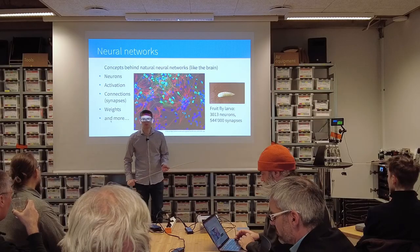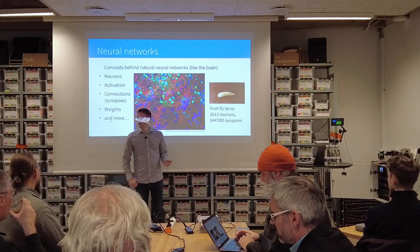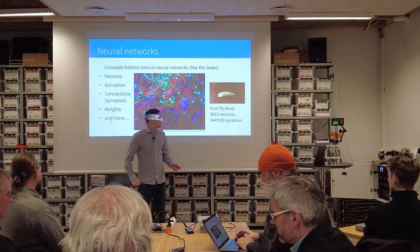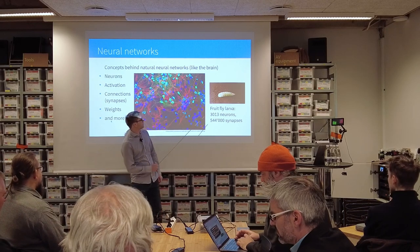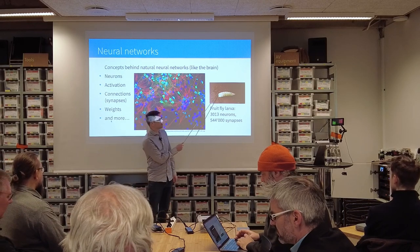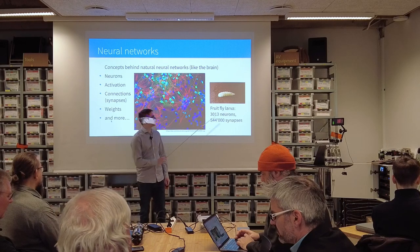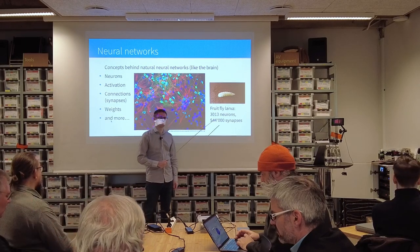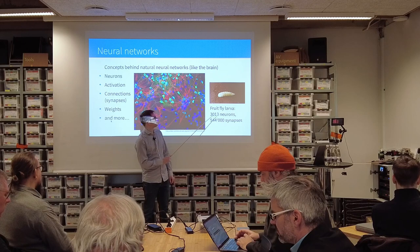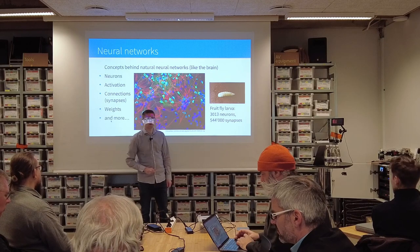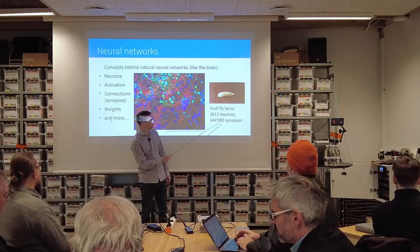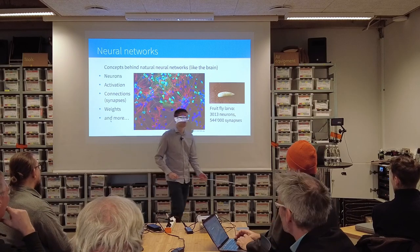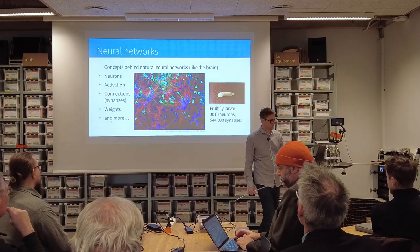Just a couple of weeks ago the complete map of the brain of the fruit fly larva was published. I'm not a neuroscientist — ask somebody who is. But a little larva like this has around 3,000 neurons and about 500,000 connections between the neurons. So that perhaps gives a sense of scale.